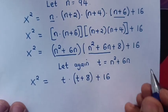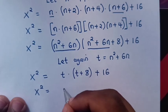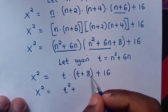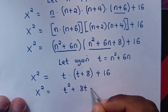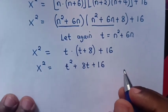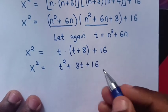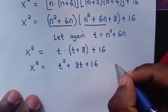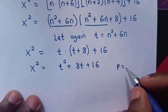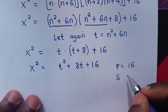Our equation becomes x squared is equal to t squared plus 8t plus 16. Now, this is a quadratic equation, so we solve by factorization. To get the product: 1 times 16 is 16. The sum is 8.